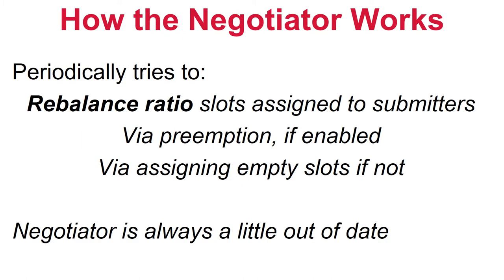Here's how the negotiator works: it runs on a periodic loop called the negotiation cycle. Once per cycle, it tries to rebalance the ratio of slots assigned to submitters. If preemption is enabled, it will initiate preemption to do so; if disabled, it assigns submitters to empty slots. At the end of the cycle, it sleeps for a configurable amount of time to let the system achieve the new balance, then runs the cycle again. The negotiator is always a little out of date, but that's fine, as it makes decisions at a slower cadence.